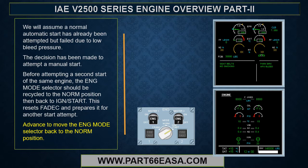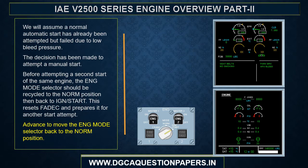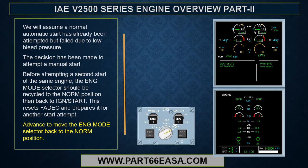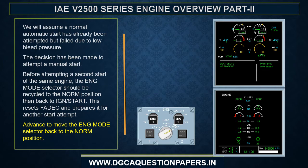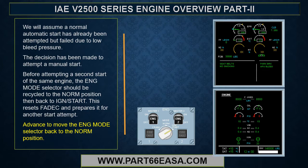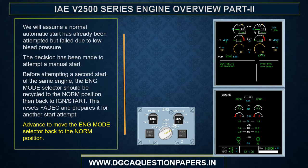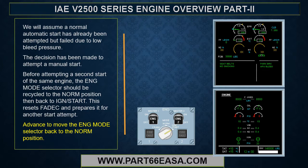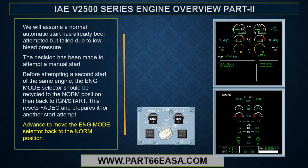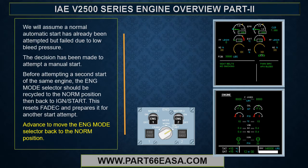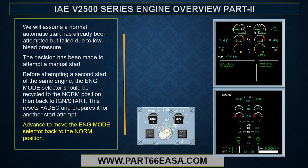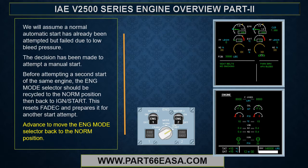We will assume a normal automatic start has already been attempted but failed due to low bleed pressure, and the decision has been made to attempt a manual start. Before attempting a second start of the same engine, the engine mode selector should be recycled to the norm position, then back to ignition start. This resets the FADEC and prepares it for another start attempt.